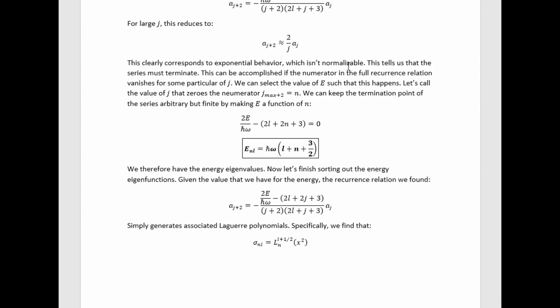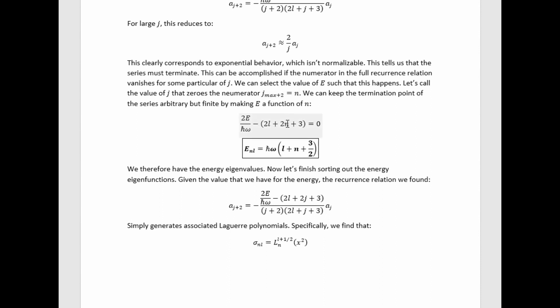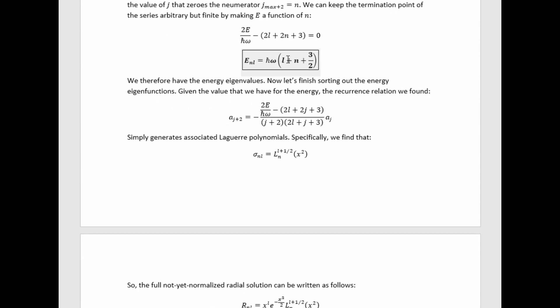So clearly it must terminate if it is to be normalizable. So this can be accomplished if the numerator in the full recurrence relation vanishes for some particular value of j. We can select the value of e such that this happens. Let's call the value of j that zeroes the numerator jmax plus 2 equals n. So we're going to call it n ultimately in the expression. We can keep the termination point of the series arbitrary but finite by keeping e a function of n. So if we stick in n for jmax plus 2, we find this quantized energy eigenvalue formula for these quantum numbers, n and l. Now m, if you remember from above, is a quantum number that showed up in spherical harmonics. So we can see m indexes degenerate quantum states. We therefore now have the energy eigenvalues.